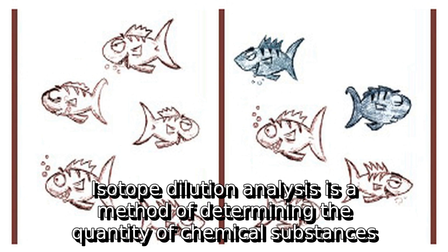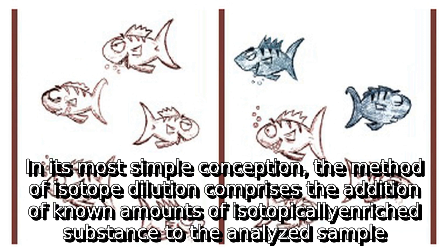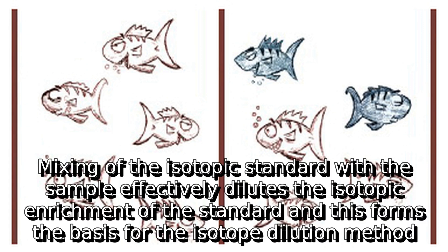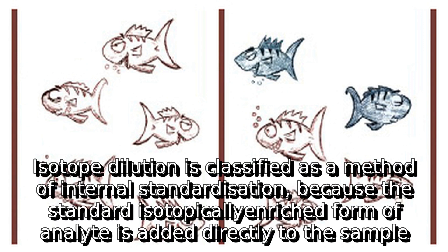Isotope dilution analysis is a method of determining the quantity of chemical substances. In its most simple conception, the method comprises the addition of known amounts of isotopically enriched substance to the analyzed sample. Mixing of the isotopic standard with the sample effectively dilutes the isotopic enrichment of the standard, forming the basis for the isotope dilution method. Isotope dilution is classified as a method of internal standardization because the isotopically enriched form of analyte is added directly to the sample.